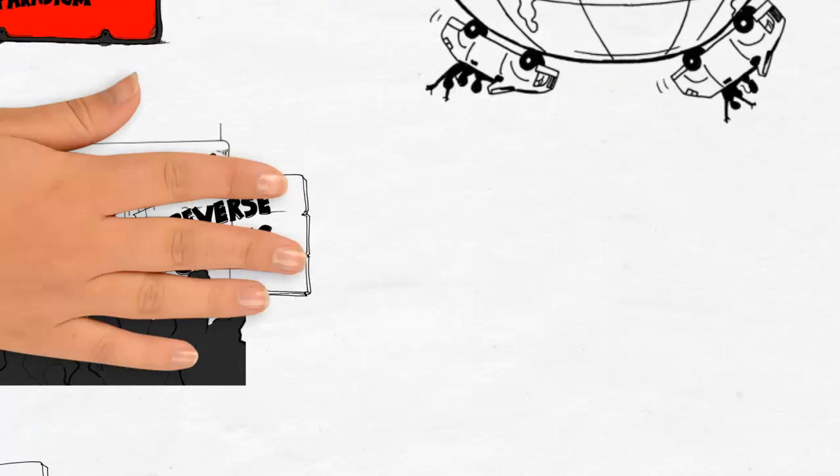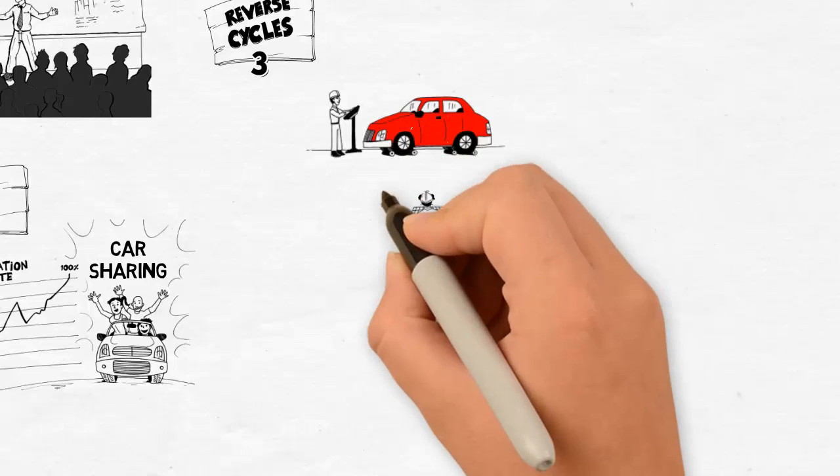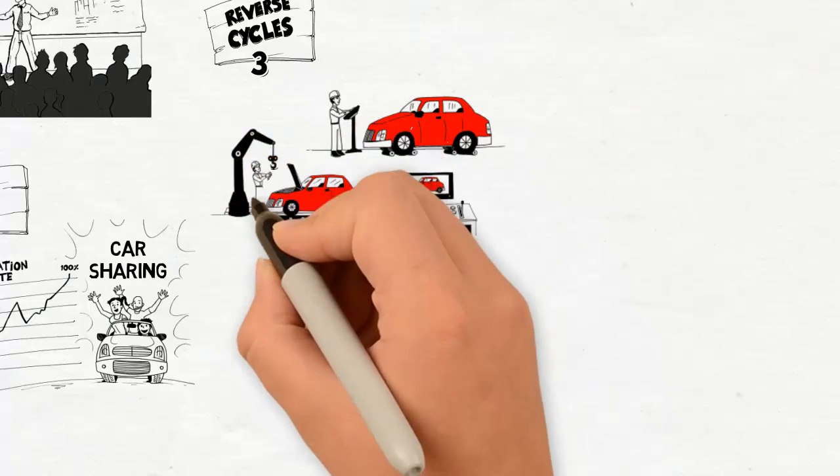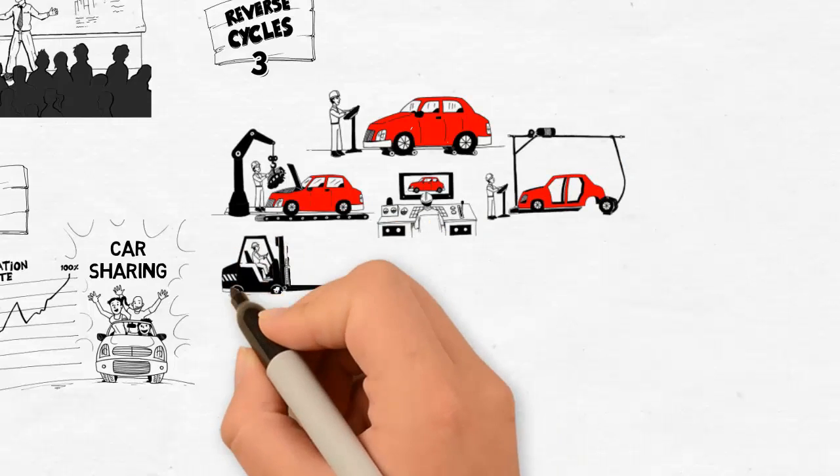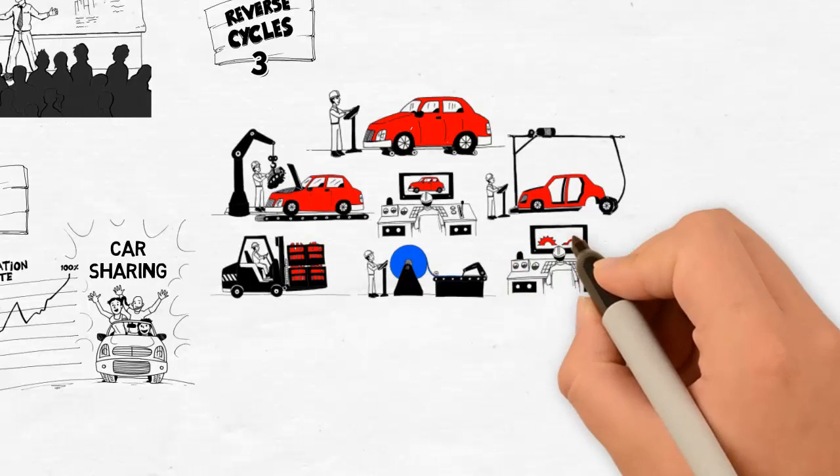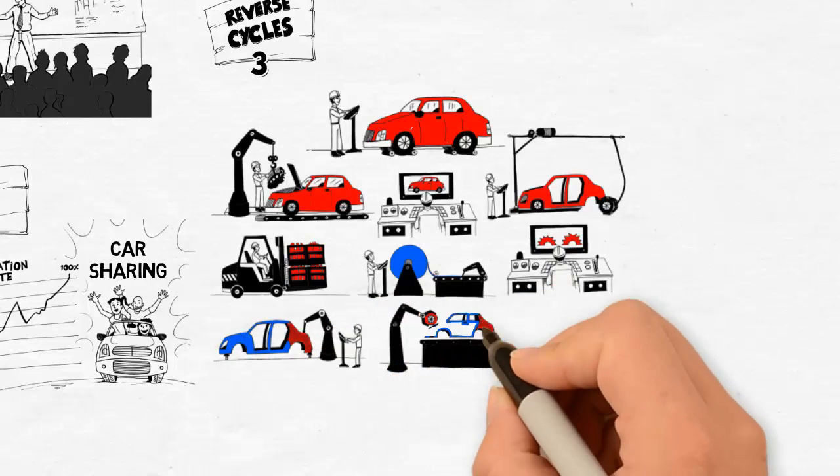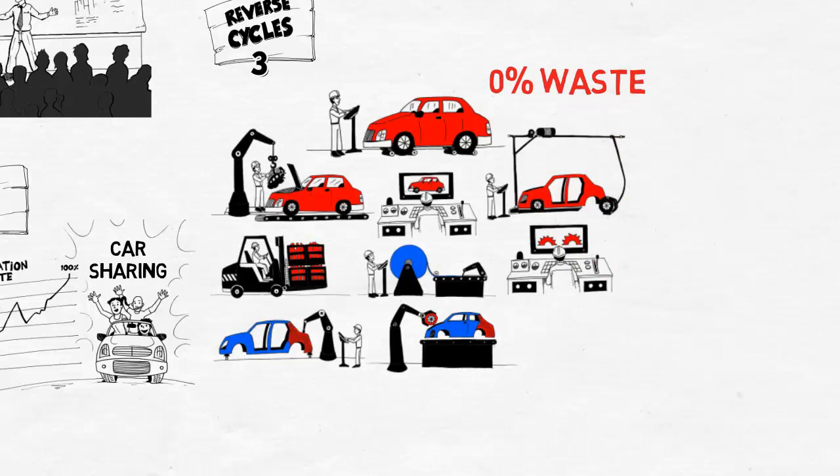Three: Reverse cycles. Circular economy-oriented companies have invested in remanufacturing operations where car components get reintroduced in the production process. For example, waste generation rates in state-of-the-art remanufacturing plants have reached an astonishing 0 percent, with all components being either reused, recycled, or valorized in treatment centers. By doing so, the need for virgin materials is significantly reduced.